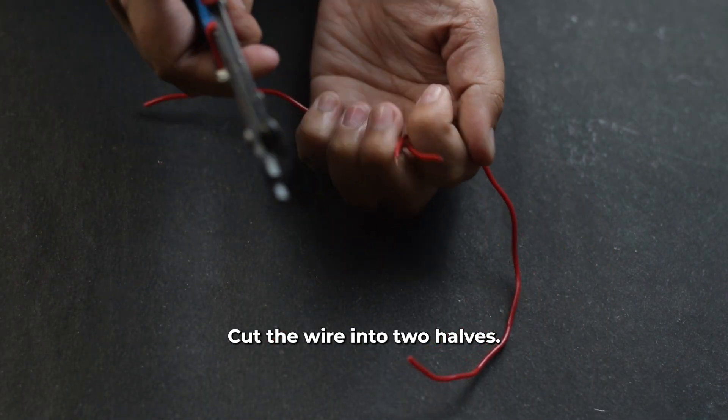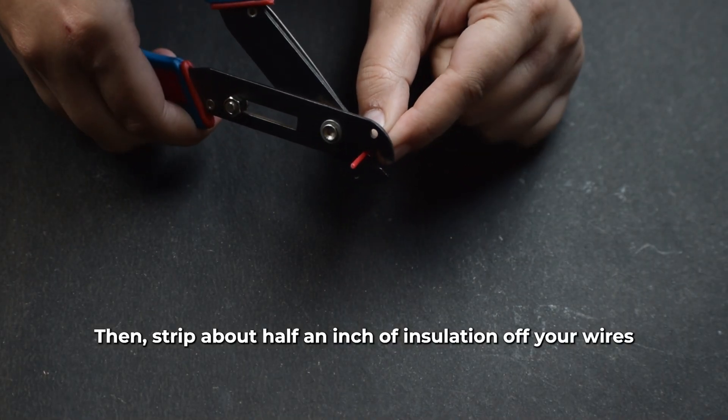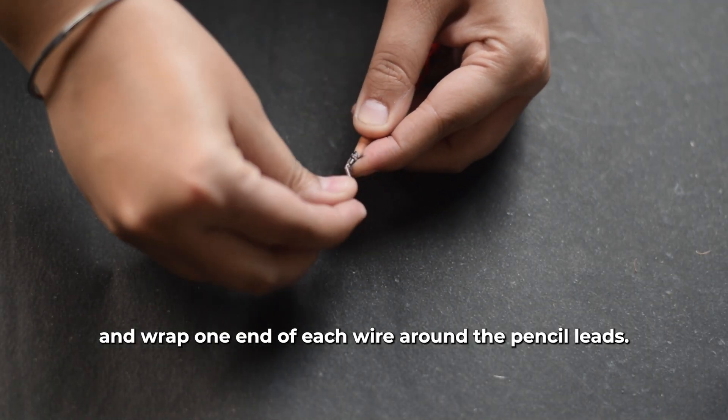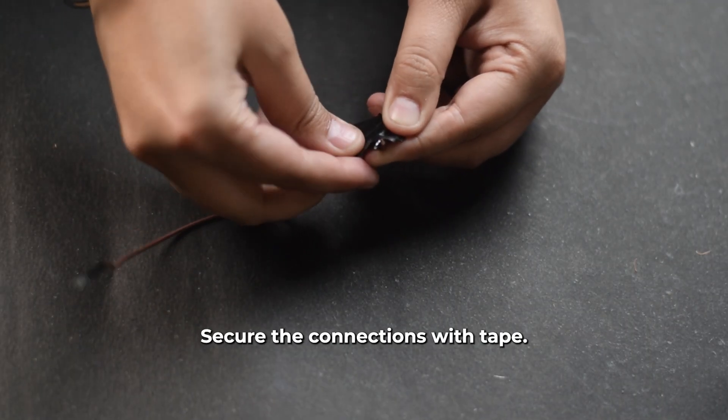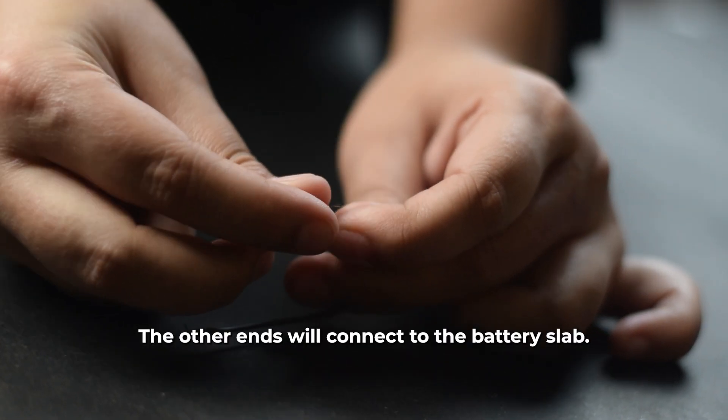Cut the wire into two halves, then strip about half an inch of insulation off your wires and wrap one end of each wire around the pencil leads. Secure the connections with tape. The other ends will connect to the battery snap.